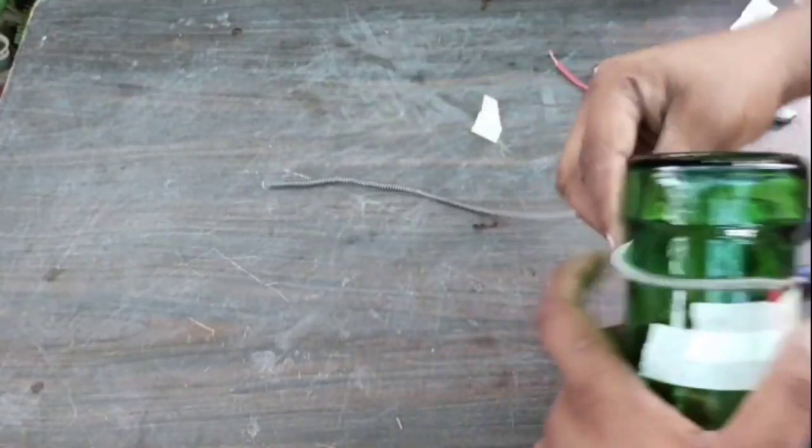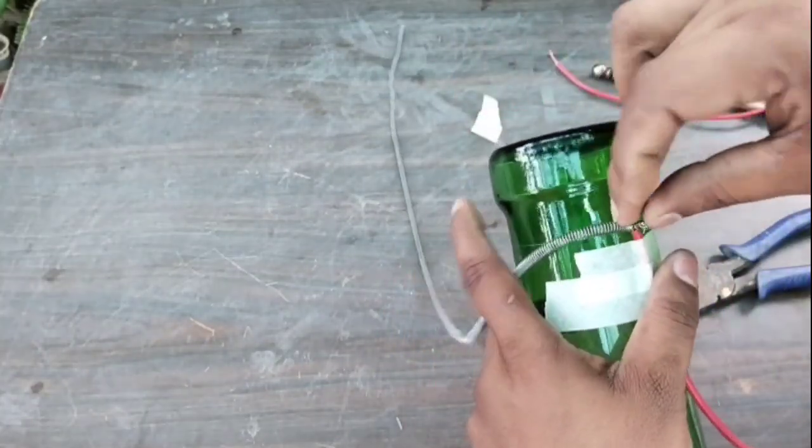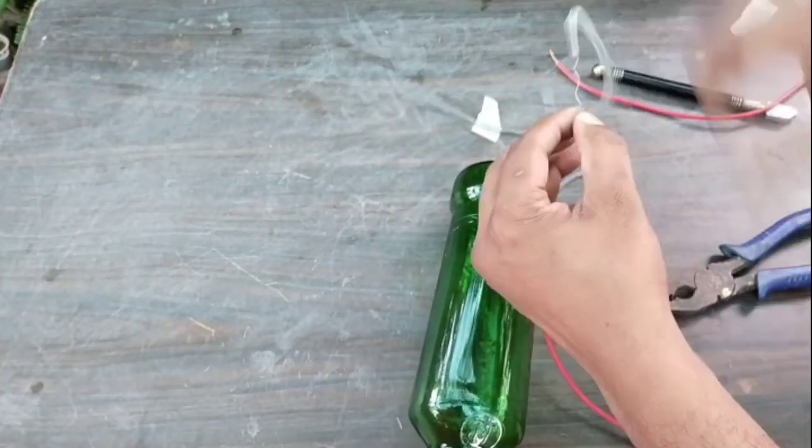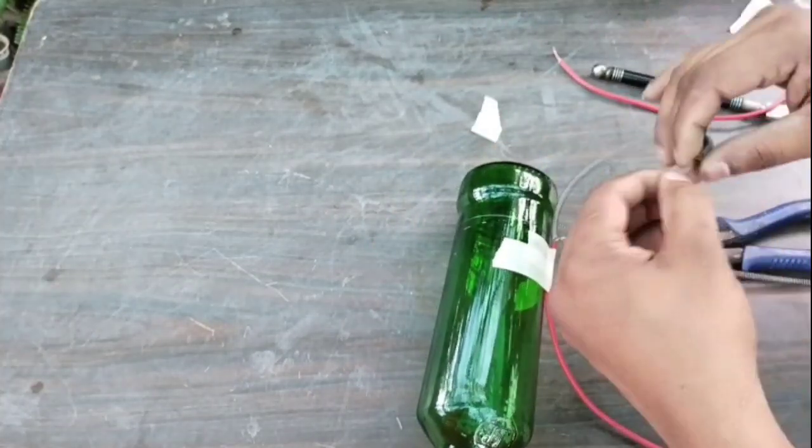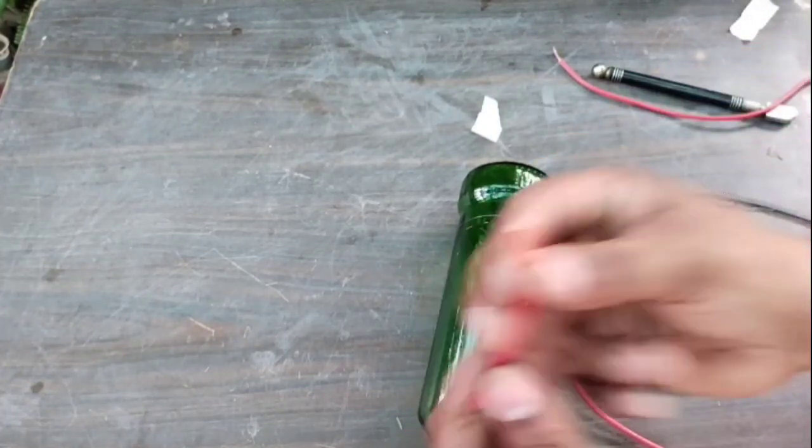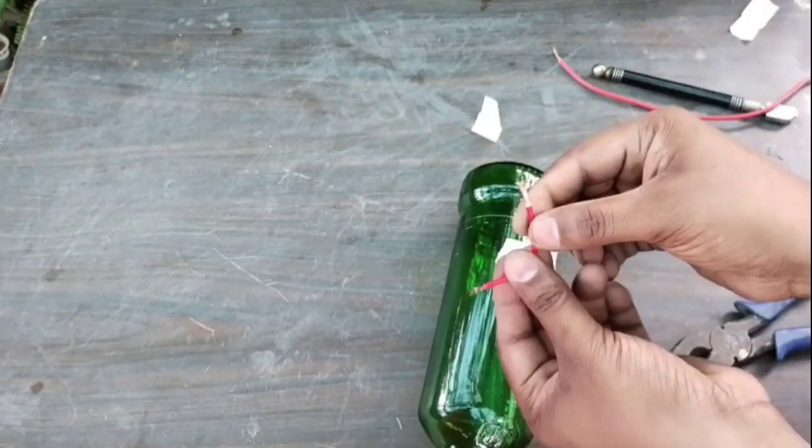We have to keep in mind that while making a circle of wire on the bottle, both the parts of the wire are separate. The wire has to be tight on the bottle because it becomes a little loose when the wire is heated.